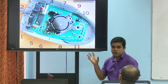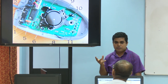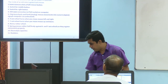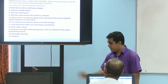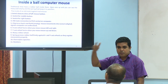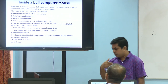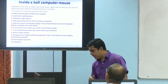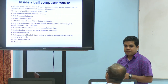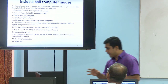Number 8 is the ball — the rubber ball. The ball movement drives the rollers. Number 9 is the spring, which presses the rubber ball firmly against the rollers.